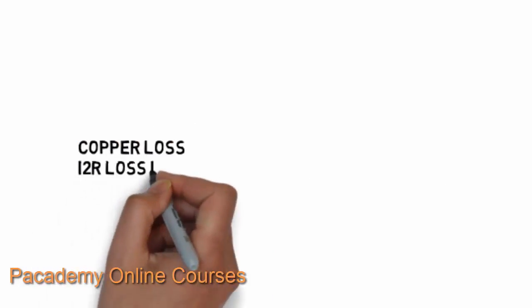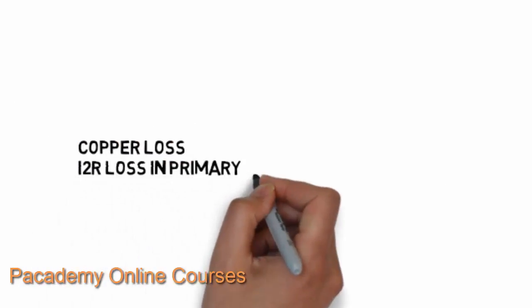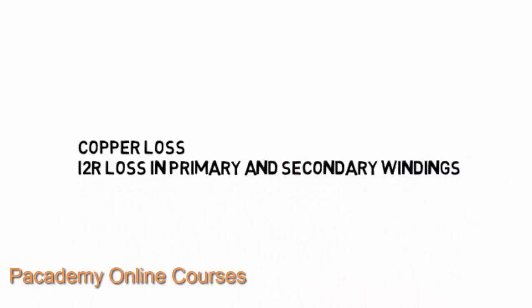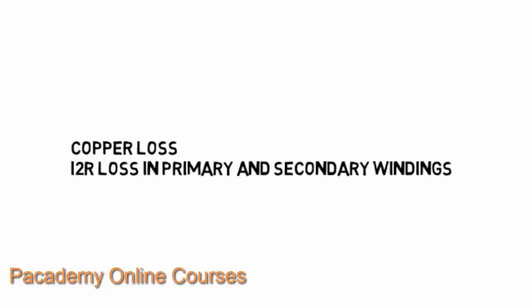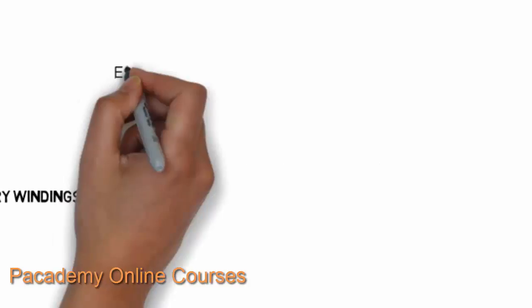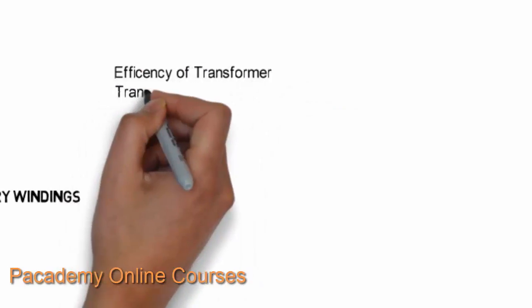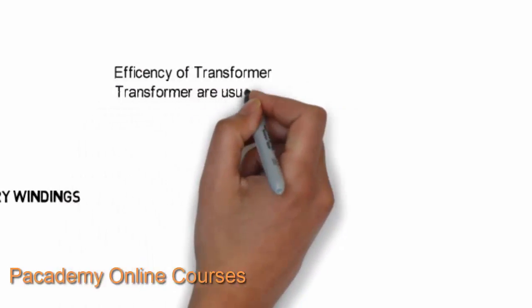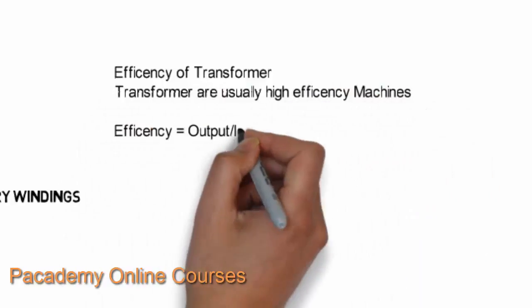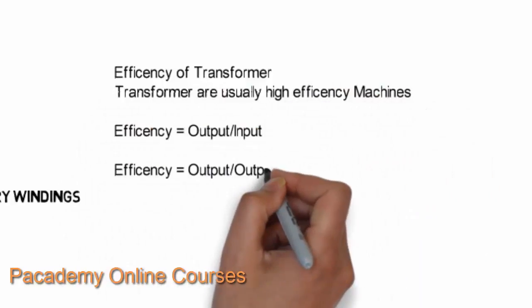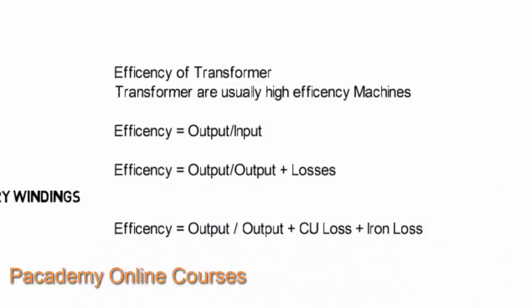The other kind of losses are the copper losses. These losses are the I²R losses in the primary and the secondary winding, also considering the losses due to heating occurring due to magnetic leakage — that is, the losses happening in the magnetic reactance of the primary and the secondary winding.